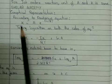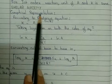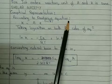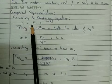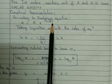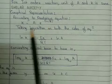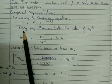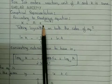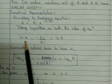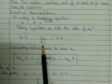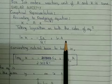The next part is the graphical representation. For that, we use the Arrhenius equation K equals A into e raised to the power minus Ea upon RT, and take the logarithm on both sides. This gives us: ln K equals minus Ea upon RT plus ln A.